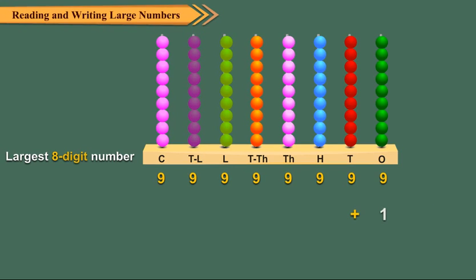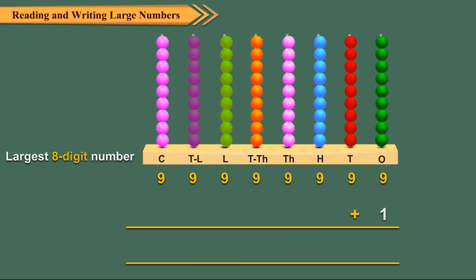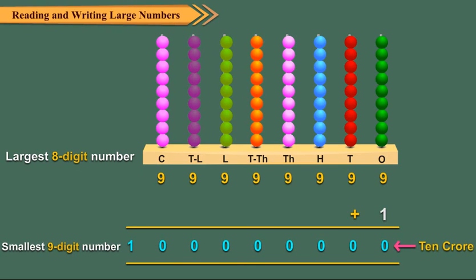When one is added to this number, we get the smallest nine-digit number. We read it as 10 crores: 10,00,00,000.